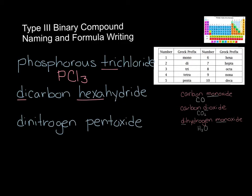Dicarbon hexahydride — it's telling us we have two carbons. Hydride is the form of hydrogen, where we drop -ogen and add -ide. Hexa refers to six, so we have six hydrogens. The formula is C2H6.